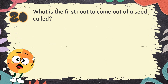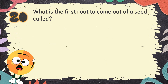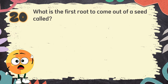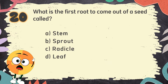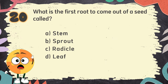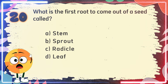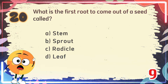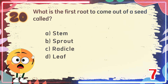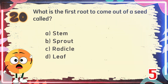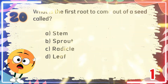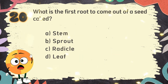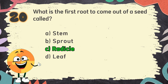Number 20: What is the first root to come out of a seed called? The choices are: A. Stem, B. Sprout, C. Radicle, D. Leaf. The correct answer is C. Radicle.